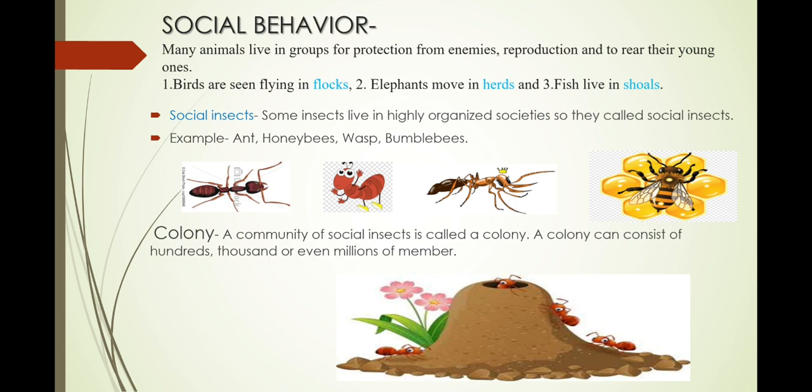Insects like ant, honeybee, wasp and bumblebee live together in highly organized societies and are hence called social insects. They are said to show social behavior because all the members of the organized community depend on each other and have a specific job to do.